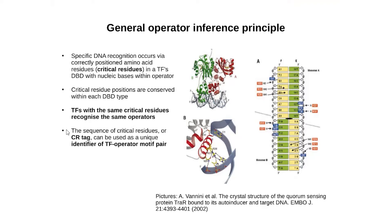Amino acid residues in critical positions constitute a CR tag that indicates the ability of an individual transcription factor to recognize specific operator sequences. So, the sequence of critical residues can be used as a unique identifier of a transcription factor for operator motifs.